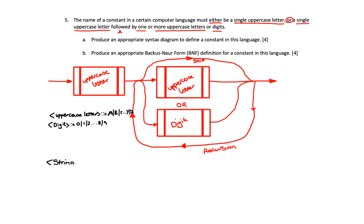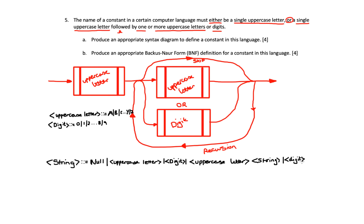In my opinion this next bit is the trickiest part. I'm going to define a string rule that can have the option of null, which will allow me to skip, or it can be an uppercase letter on its own, or a digit on its own, or an uppercase letter that is recursively called for multiple uppercase letters, or a digit that is recursively called — covering every different combination inside this string rule. Then all I need to do in my constant rule is call the uppercase letter, because that is a must. It must start with an uppercase letter followed by the string rule, and that should cover everything the question asks for.